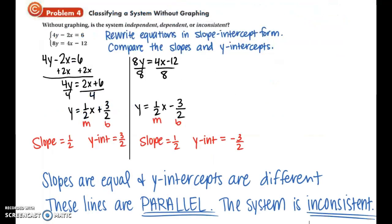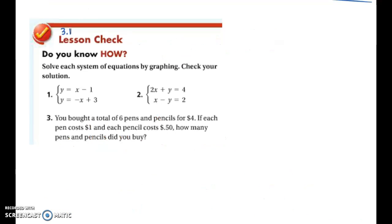In our last example, we're given two equations, and we need to figure out is the system independent, dependent, or inconsistent. When we put in the equations in slope intercept form, we find out that the slopes are one half, which are the same, but the y intercepts are different. This means the lines are parallel and the system is inconsistent. Make sure you complete the lesson check prompts for section 3.1.